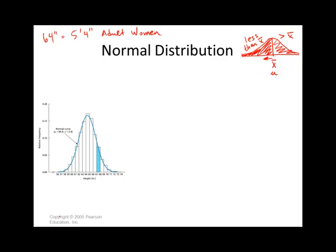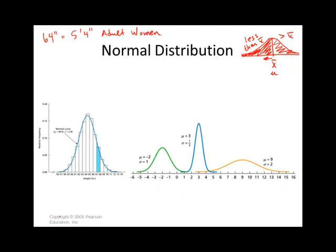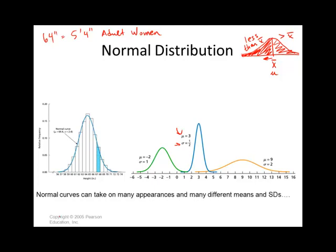The average height for men is slightly higher, maybe 5 foot 7 or 5 foot 8. Keep in mind that normal distributions have all different shapes and sizes, but a couple things they have in common: they are symmetric and bell-shaped, and they have a mean and a standard deviation. Remember that mu means the population mean and sigma means the population standard deviation. Normal curves can take on many appearances with many different means and standard deviations.